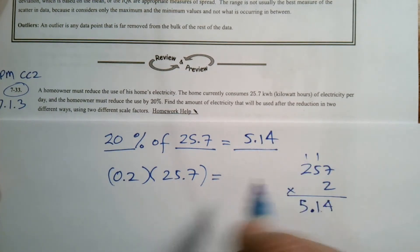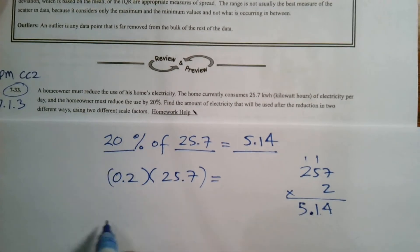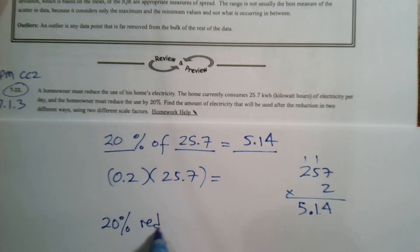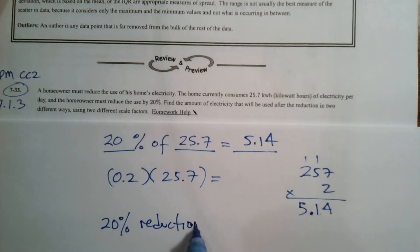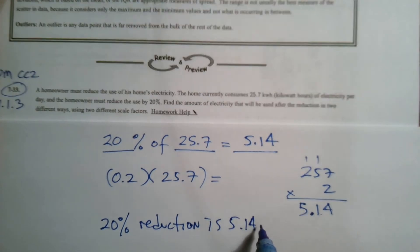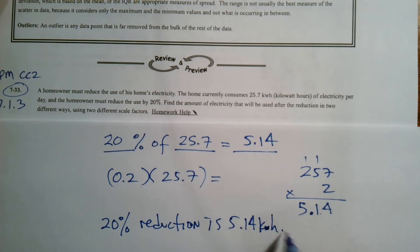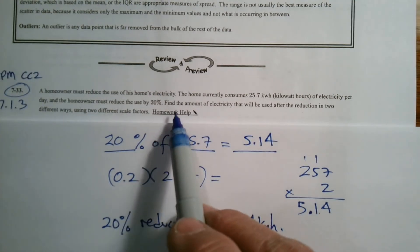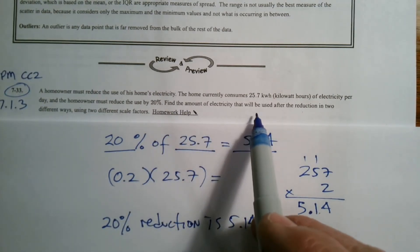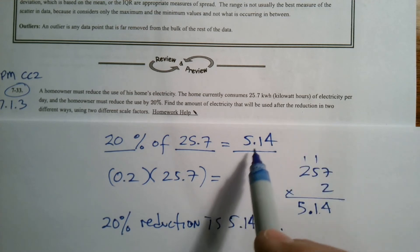So 5.14. What have we found? We found that the 20% reduction is 5.14 kilowatt hours. But let's read the question. It says find the amount of electricity that will be used after the reduction. So this is the reduction.